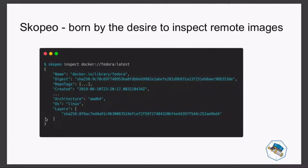This is how it looks. We can do a Scopio inspect on a Docker remote image on some container registry — for example, Fedora latest. We can inspect some configuration and metadata: name, digests, tags like Fedora latest, the timestamp when it was created, the architecture, and all the things that make up a container image.